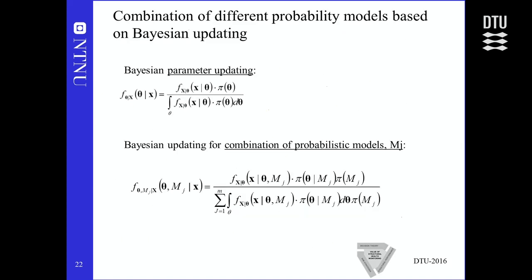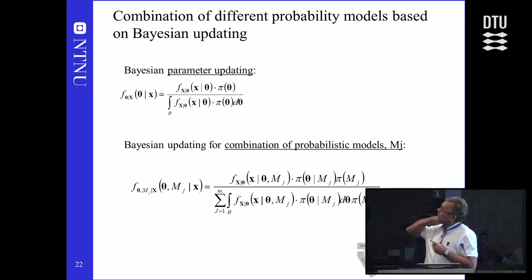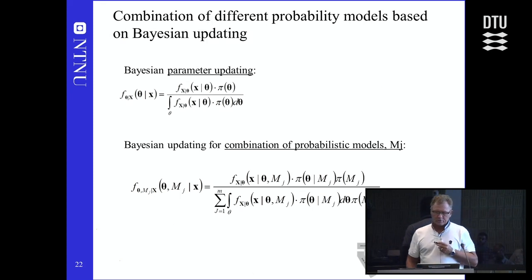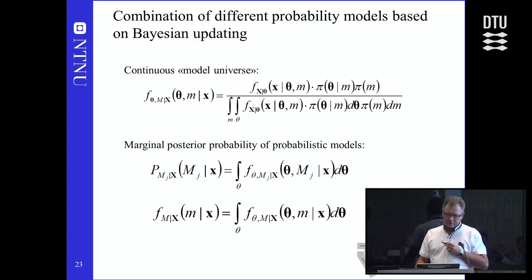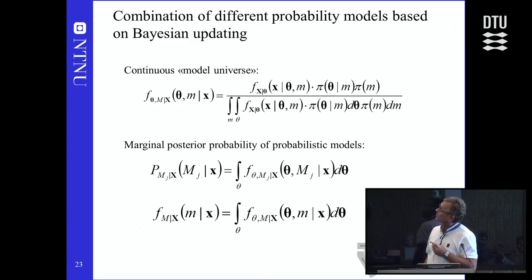Combinations of different probability models can be assessed using Bayesian updating formulations. Traditional Bayesian parameter updating is the standard expression; for a combination of probabilistic models M_j with different a priori probabilities, one can find the joint posterior of the parameter vector and the model, then integrate away the parameter vector to get the marginal posterior of the model. This also applies when the model space is continuous, for example a structural model with a continuous parameter.